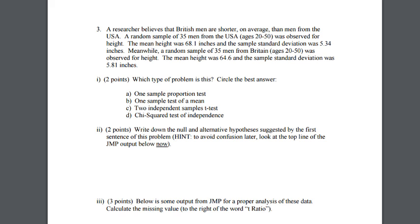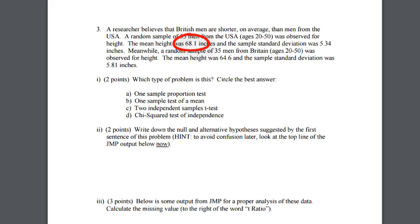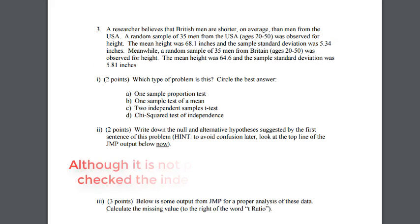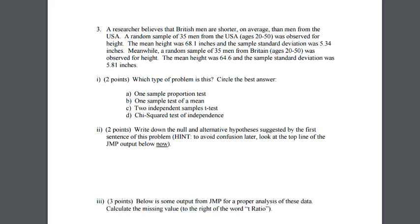For question number three we want to identify what chapter this comes from. We have men from the United States and men from Britain, and we are simply measuring their heights. We're given the height, standard deviation, and sample size for each group. These groups are independent of each other and we're measuring a quantitative value — means — so we are doing a two-sample t-test for two independent means.